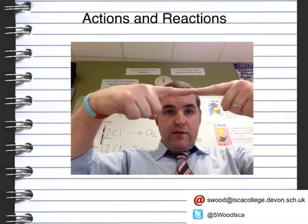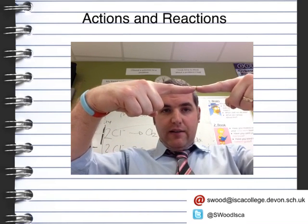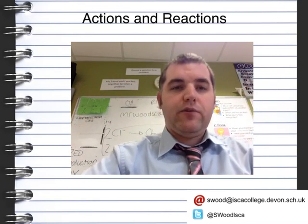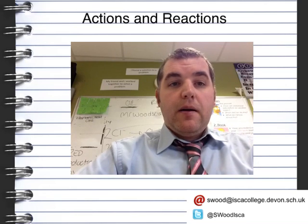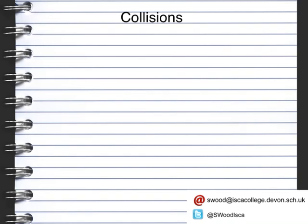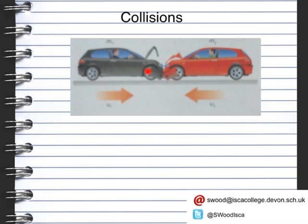When two forces hit each other, this object hits that object with the same force that hits that object. So every force has an equal and opposite reaction. Now when two things hit each other, there is a collision. Looking at this diagram, we can see there is a collision between the black car, car A, and the red car, car B. Car A hits car B with a force, and car B hits car A with the same amount of force — there will be a force that is equal in both directions.